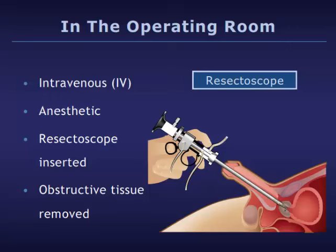You will be given an anesthetic, which is a medication that blocks the sensation of pain. If you are given a general anesthetic, you will be asleep for the surgery. If you are given a spinal anesthetic, which involves passing a needle into your back, you will remain awake but the lower half of your body will be numbed. Spinal anesthesia is preferred for most patients undergoing TURP.